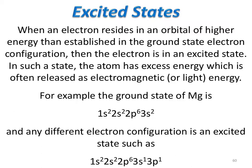The ground state of magnesium, as we previously saw, was 1s2, 2s2, 2p6, and 3s2. Any different electron configuration would be an excited state. For example, one of the electrons in the 3s shell can be promoted to a 3p subshell, giving it extra energy — placing it in an excited state.